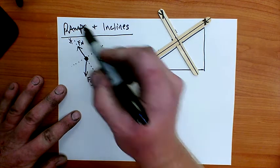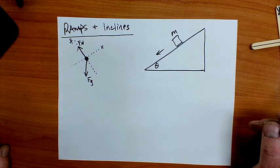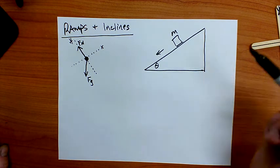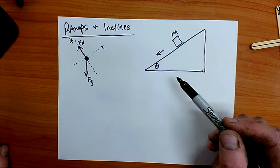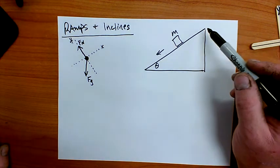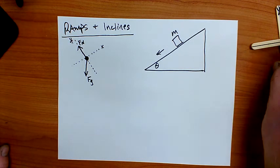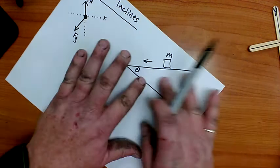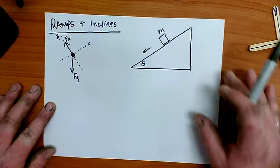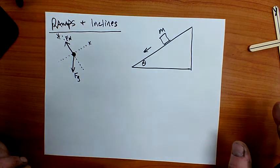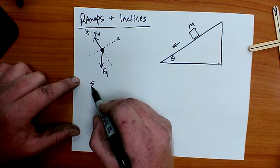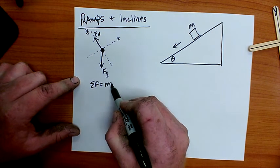That's my y direction. So as part of our force diagram, if we're on a ramp we rotate our axes so that the direction of acceleration lines up with one of our axes. For ramps we're usually talking about the x-axis — always make the surface of the ramp your x-axis, just as on a level surface that would be the x direction.